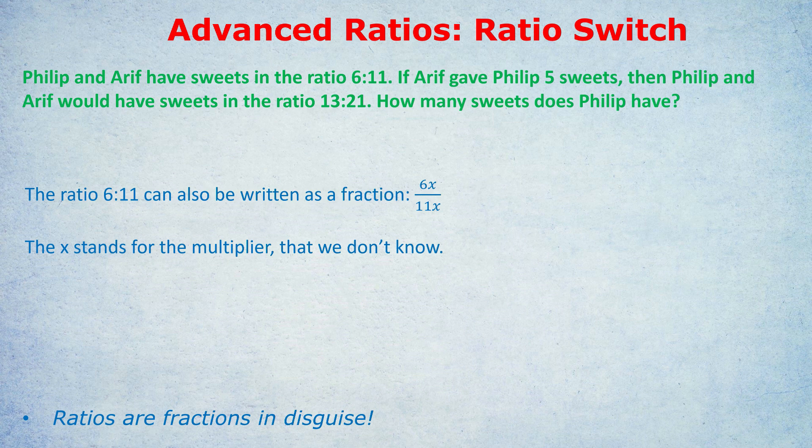First, why do we have an x there? The x is useful in terms of 6x over 11x because it stands for the unknown multiplier. When it says Philip and Arif have sweets in the ratio 6 to 11, it doesn't mean that Philip literally has 6 and Arif literally has 11, although that's possible. For example, there could be some sort of multiplier. So it could be 12 to 22 if x was 2 or 18 to 33 if x was 3. The x is the multiplier. That ratio, 6 to 11, can be scaled up. You could multiply both of them by 2 and that's the reality, 12 to 22. Multiply both of them by 4, 24 to 44. We don't know how many actual sweets there are, we just know the ratio. Which is why we don't just write 6 over 11. We write 6x over 11x.